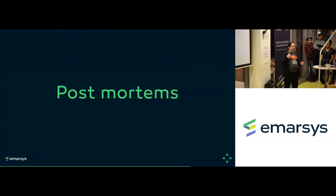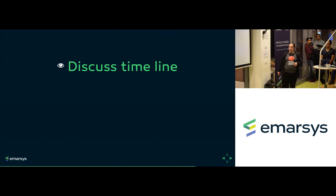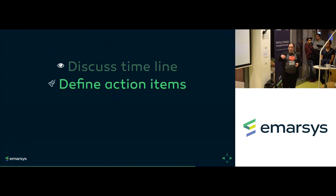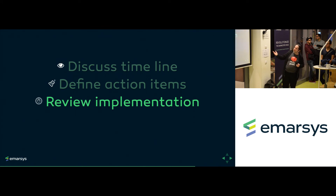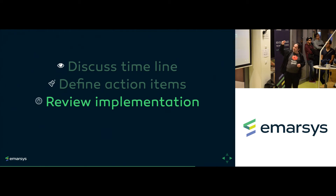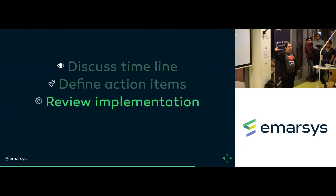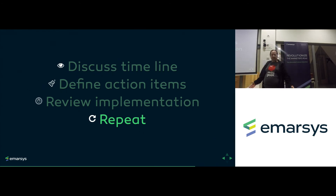Postmortems are another thing every DevOps team should do. First, we discuss the timeline — find out what happened and how we got to that outage. Then we define action items: whatever we want to do to make sure it never happens again. Then we review implementation — we have to make sure people actually act on those action items. We review whether they've done it, and repeat whenever we have the next outage.